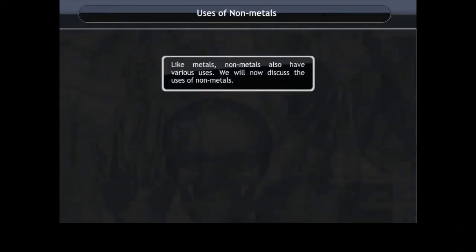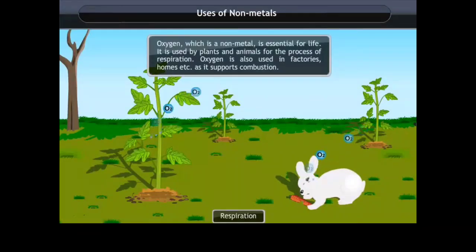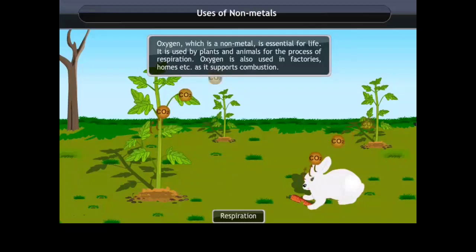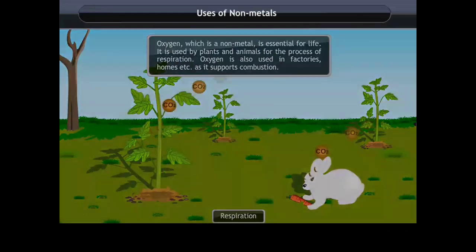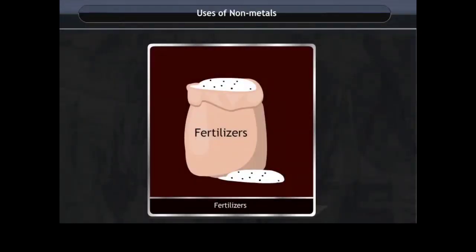Uses of non-metals: Like metals, non-metals also have various uses. Oxygen, which is a non-metal, is essential for life. It is used by plants and animals for the process of respiration. Oxygen is also used in factories, homes, etc., as it supports combustion. Nitrogen, a non-metal, is used in fertilizers to enhance the growth of plants.